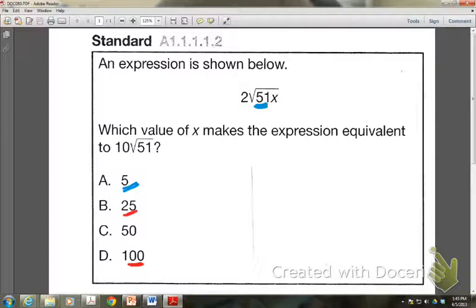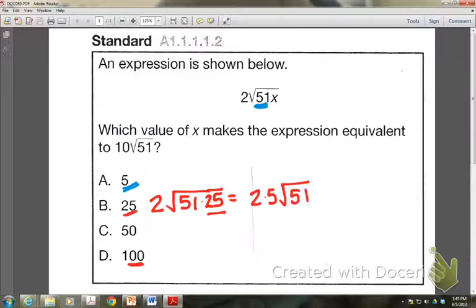So if I took that 25 and substituted in for the x in the problem, I'd then be able to use what we talked about today and said that I can take the square root of 25. The square root of 25 is 5. And that 5 would come out to be multiplied with that 2 in the front and the 51 would stay underneath the square root. Thus allowing us to simplify to 10 square roots of 51.